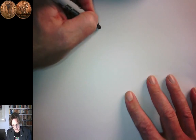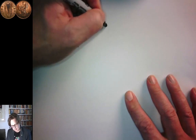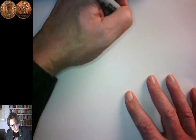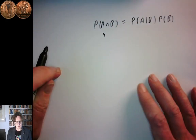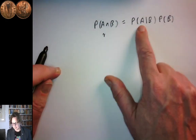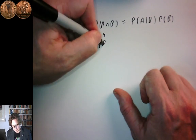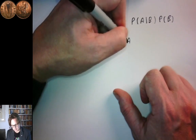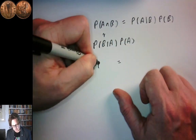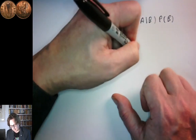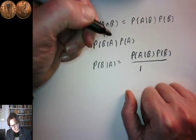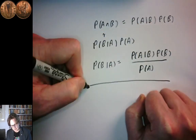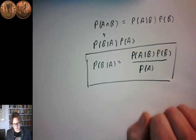What we want to talk about today is Bayes' Theorem. We just saw that P of A intersection B is equal to P of A given B multiplied by P of B. But A intersection B is symmetric — there's nothing that says A has to come first. So it's also equal to P of B given A multiplied by P of A. That tells us P of B given A equals P of A given B times P of B, divided by P of A. And that is Bayes' Theorem, or at least a variant of it.